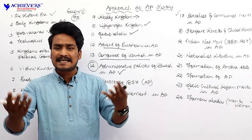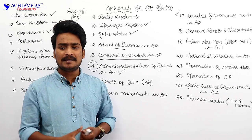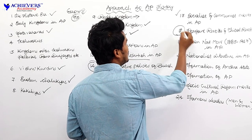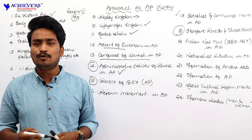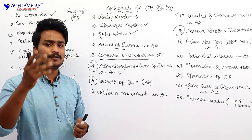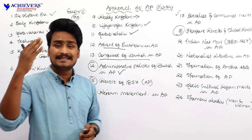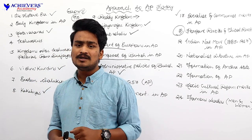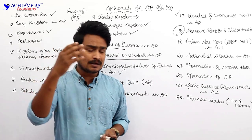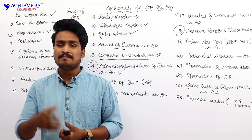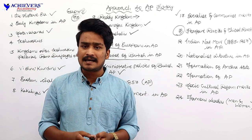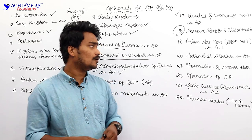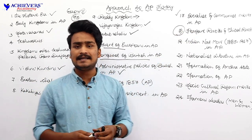We shall discuss about the various socialist and communist movements in Andhra Pradesh. Next we have another important chapter — peasant revolts and tribal revolts with respect to Andhra Pradesh. Against zamindars, there were many revolts raised by peasants and tribals. For example, Alluri Sitarama Raju and the Rampa Revolt — the Rampa Revolt is an example of a tribal revolt.